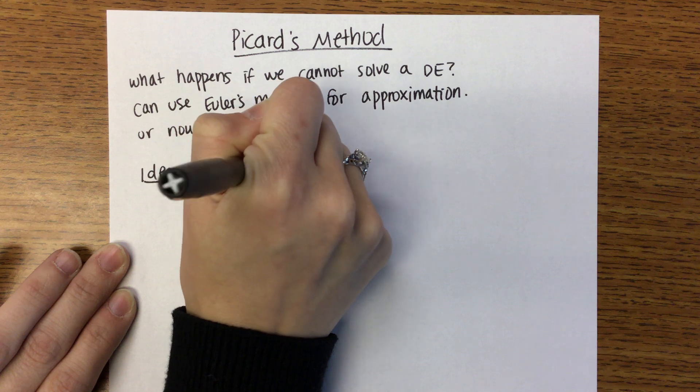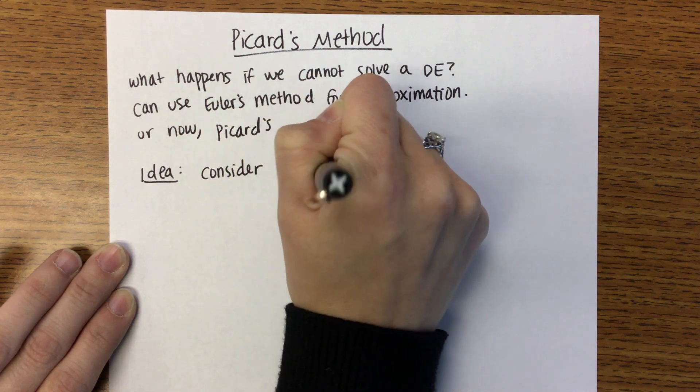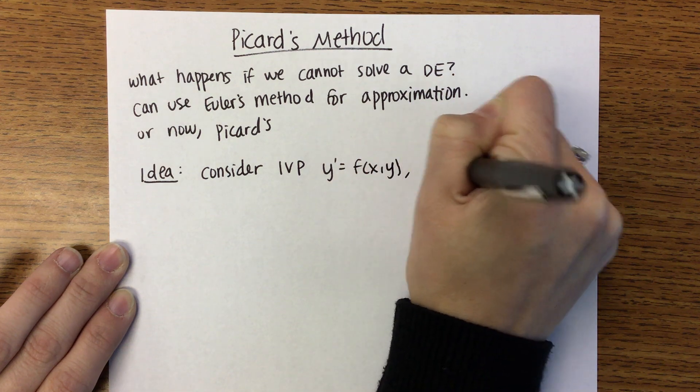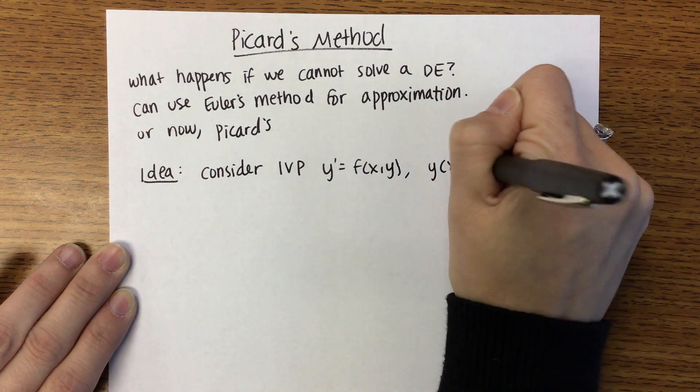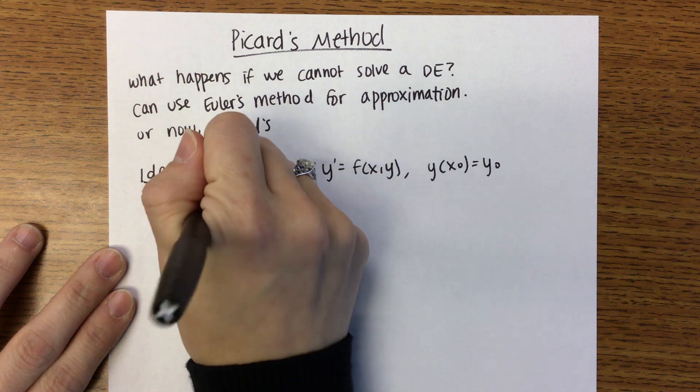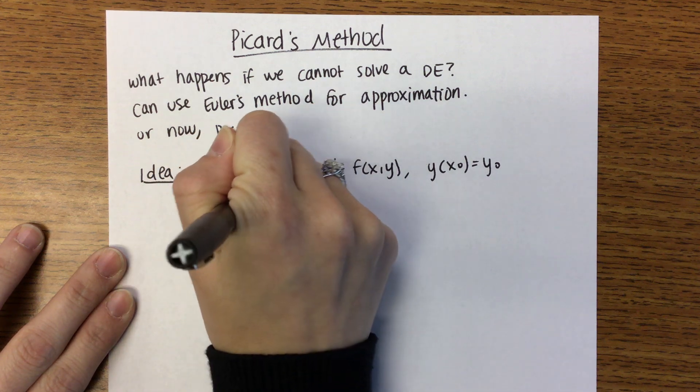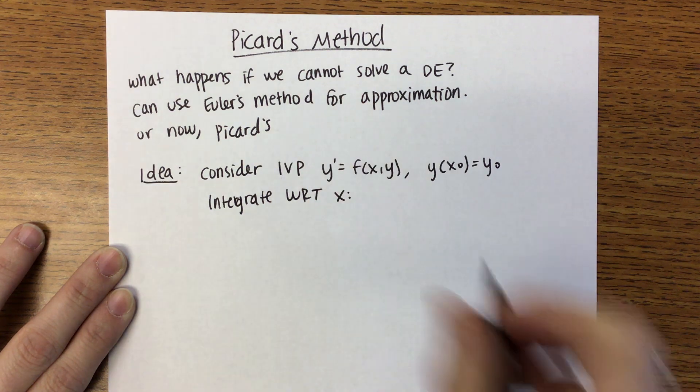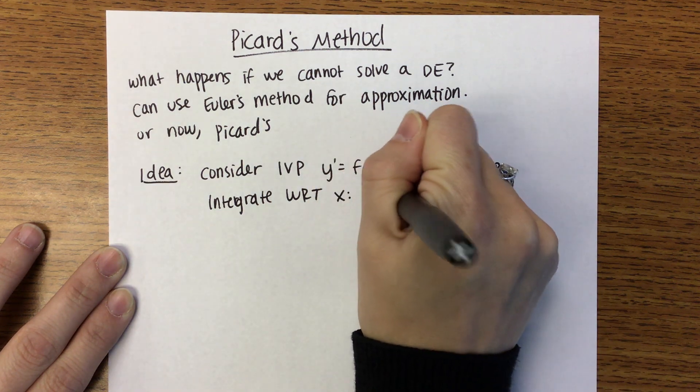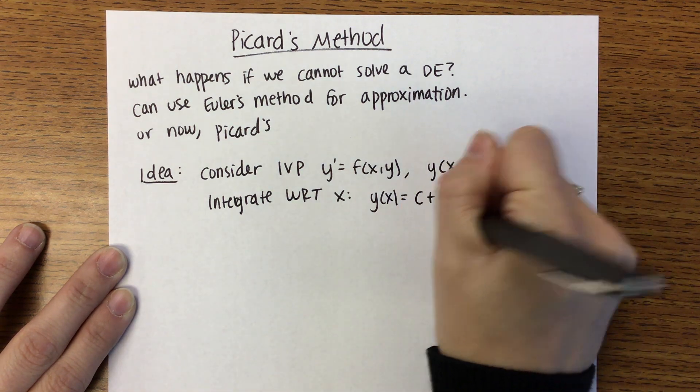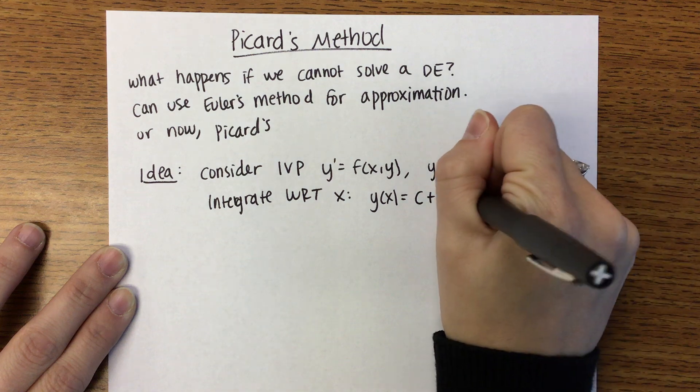Consider that you have some initial value problem. Y prime is equal to a function of X and Y, and then you have some initial condition Y of X0 is equal to Y0. We are going to integrate with respect to X.